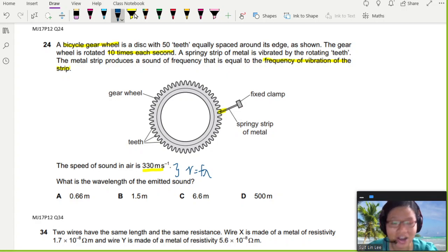So the hint will be here: frequency of vibration of the strip. So whenever the strip hits the teeth, there's one vibration. So we need to find out in one second how many vibrations there are.